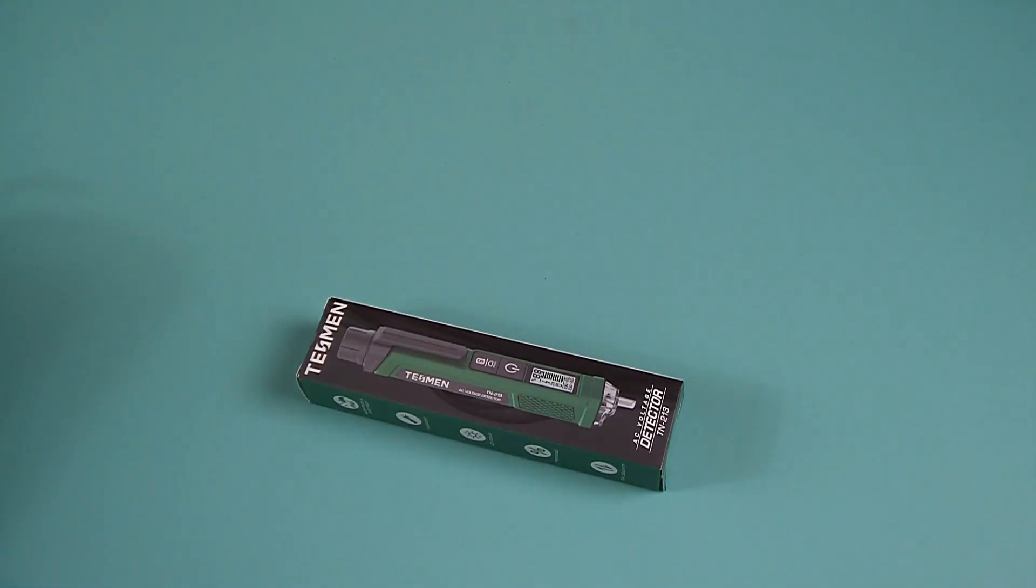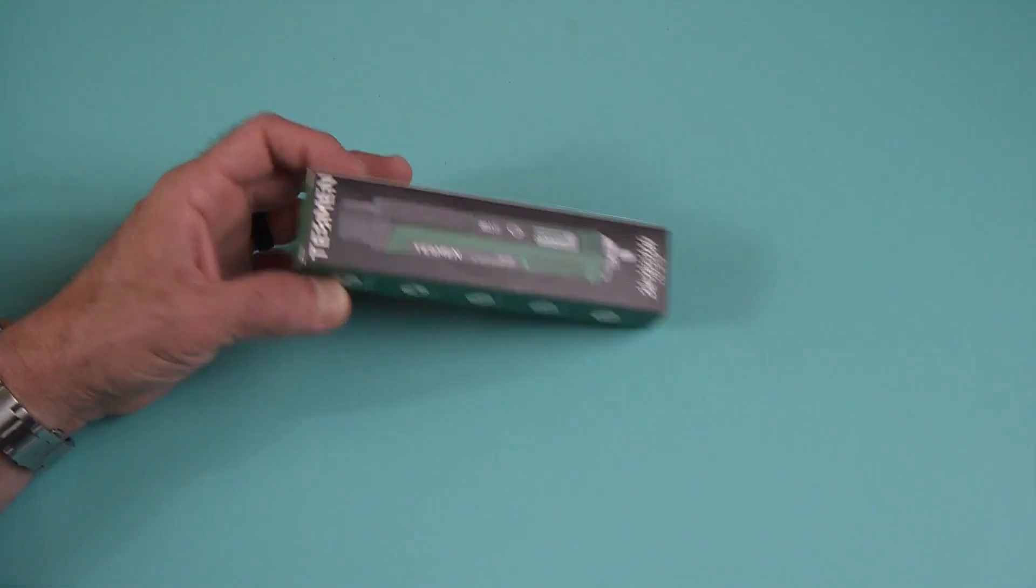So Tesman reached out to me and they came up with a new product now and it is basically a voltage detector pen. Now I've had several of these over the years. Very handy to have in your pocket. You just stick it in your pocket and you can see if there's power in an outlet or on a wire or loose wire or something like that.